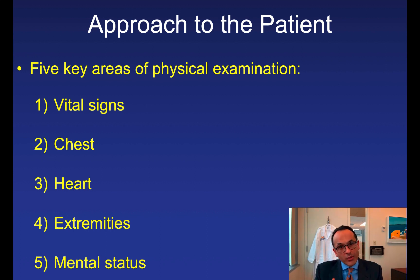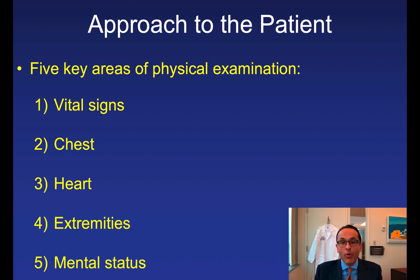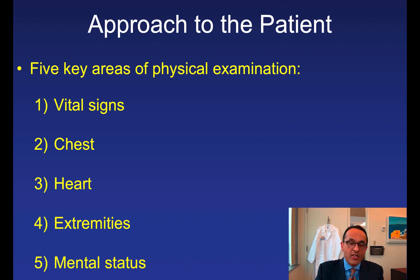Five key areas on physical exam: First, vital signs — any abnormality should alert you to a potential life-threatening problem, even something seemingly benign like sinus tachycardia. Second, chest exam — listen for wheezing, murmurs, or crackles. Third, heart exam including jugular venous pressure. Fourth, the extremities — assess whether the patient is cool and clammy or warm and well-perfused, and check for peripheral edema. Fifth, mental status, which we'll return to when discussing indications for intubation.